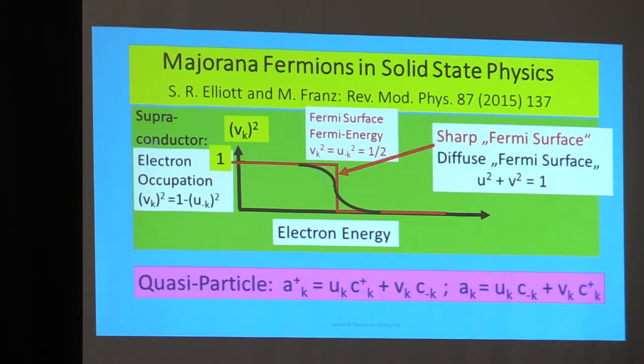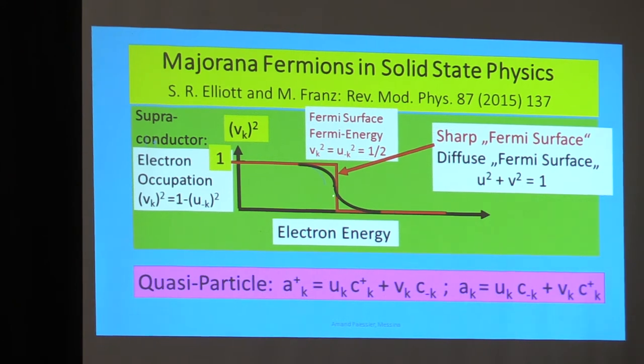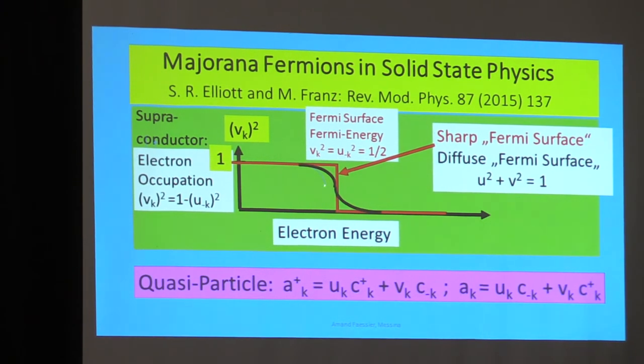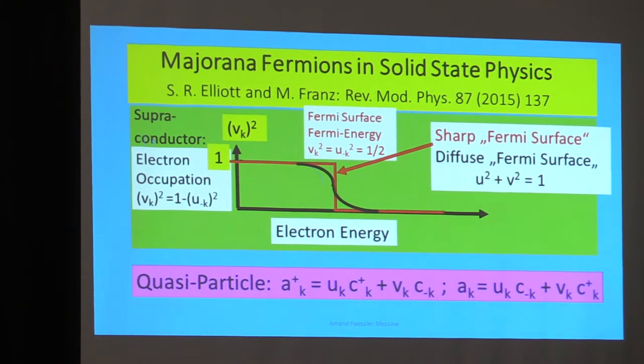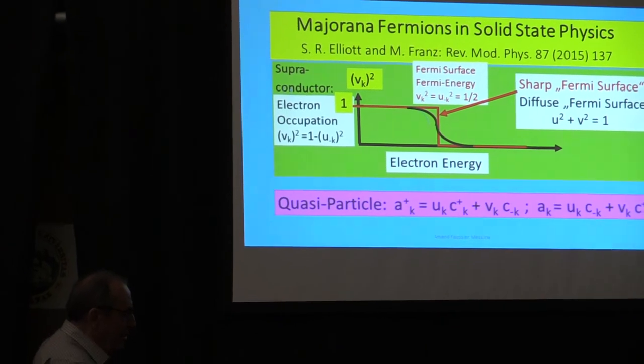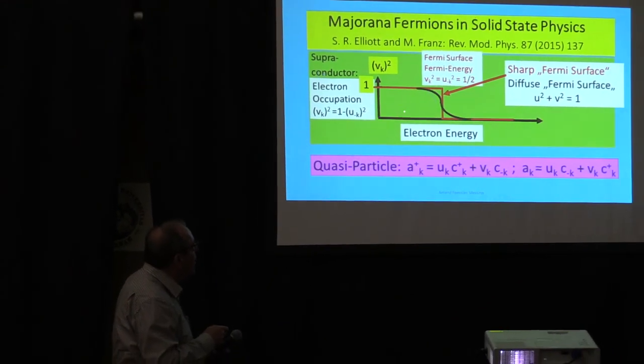So the state here is partially occupied and partially empty. And these quantities which describe the occupation probability is V². The amplitude is V, and V² is the probability that this state is occupied, and that the state is empty is U², and naturally always the sum of V² plus U² must be one in superconducting solids. You can now ask excitations here. When you want to make an excitation here, at that point, the V², the probability that the state is occupied, and the probability that the state is empty is one-half, just one-half at the Fermi surface here. And when you now, in solid state physics, you have a tremendous amount of states, 10²⁸ states. So you have also many states at the Fermi surface.